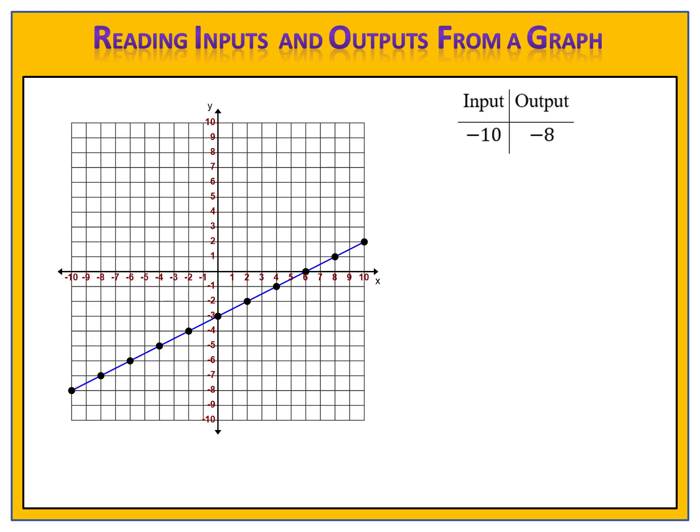Let's move along to the second point. What are the coordinates of that point? Negative 8 comma negative 7. The input is negative 8, and the output is negative 7. And so in our input and output table, we'll record the input negative 8 and the output negative 7.